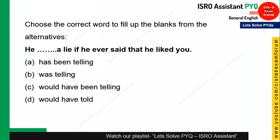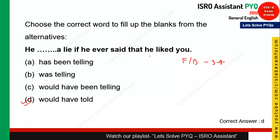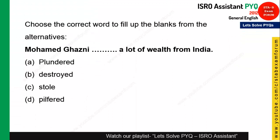You will find approximately three to four fill-in-the-blank questions in the ISRO exam. The statement is: 'He ___ a lie if he ever said that he liked you.' This is a conditional statement meaning he would have told a lie if he ever said that he liked you. Option D is the most appropriate and correct answer.